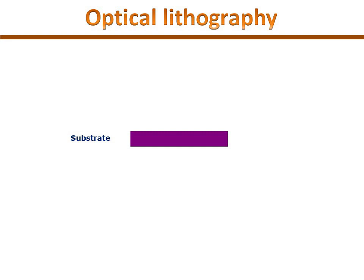To perform an optical lithography, we need an optical mask with a pattern to be transferred and a resist sensitive to the lithographic agent — light in this case — called photoresist.